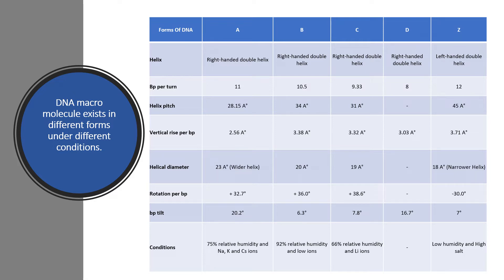At 92% relative humidity and low ion concentration, B form exists. At 66% relative humidity and in the presence of lithium ions, C form exists. At low humidity and high salt concentration, Z form exists.